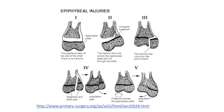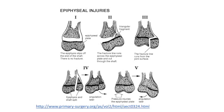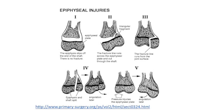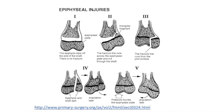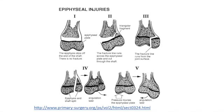Prognosis for type 1 and type 2 usually isn't too bad — realignment isn't usually a major issue. But for types 3, 4, and 5, the prognosis is a lot worse because you'll have problems with realigning the epiphyseal plate perfectly. As you can see in the type 4 picture, the epiphyseal plate is misaligned, and in type 5, the plate is crushed on the left side, causing the right side to grow further than the left, resulting in uneven bone growth.